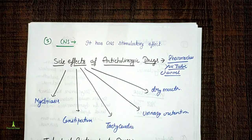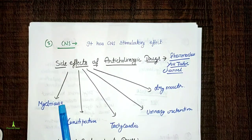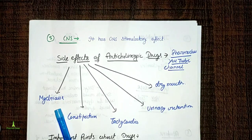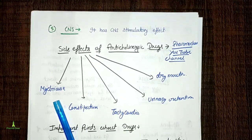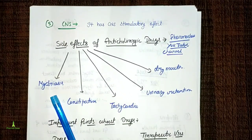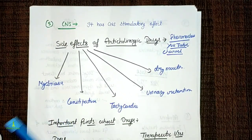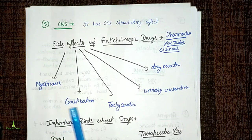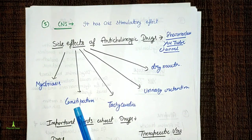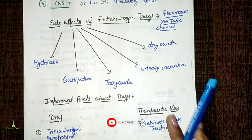Now for the side effects of atropine: mydriasis — the pupil is dilated (midriatic effect). Constipation — because GIT motility is reduced, it will cause constipation. These are the main side effects seen clinically.